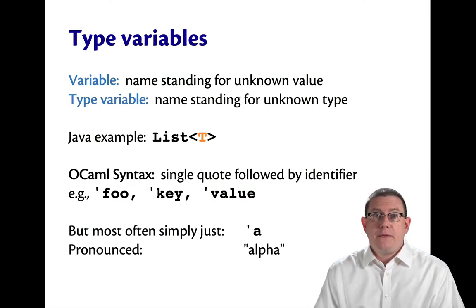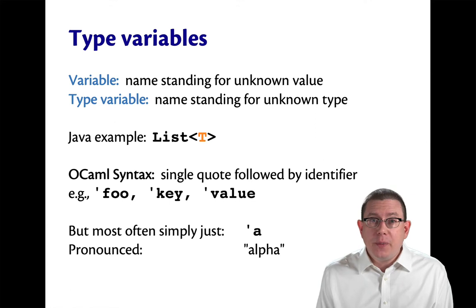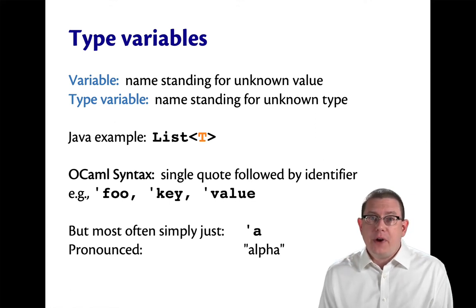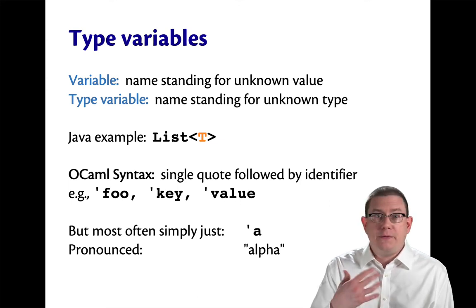So we have variables that are the normal kinds of variables we've been using all along. You might think of those as value variables. Type variables stand for an unknown type in the same way as a regular variable or a value variable stands for an unknown value.